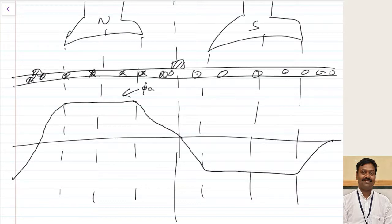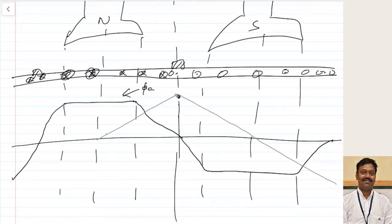After this, we have seen the MMF produced because of the conductors. At one point it will be peak, at another point it will be peak, and at another point it will be minimum. This is the armature MMF. Because of this armature MMF, the flux will be produced, and up to a certain region the reluctance is less so it follows linearly.